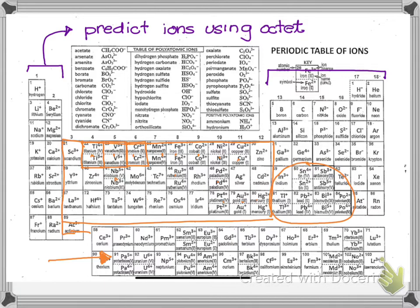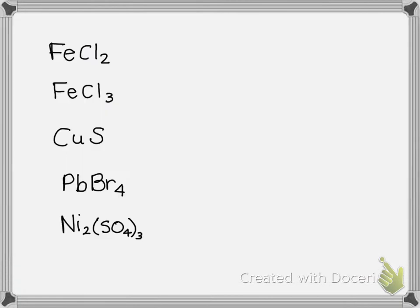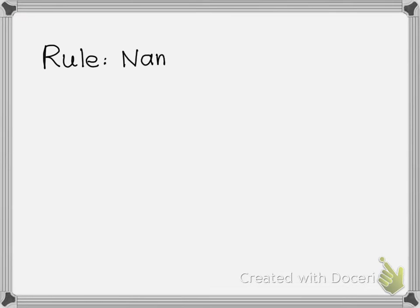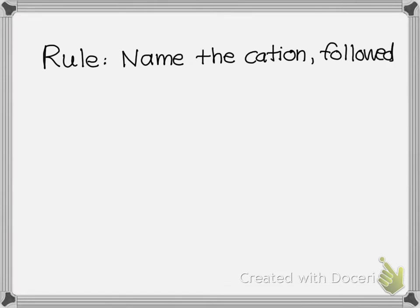So how are we going to go about naming these? Here's the rule: you're going to name the cation followed by the name of the anion. This might sound familiar because on all ionic compounds, that's the general idea.